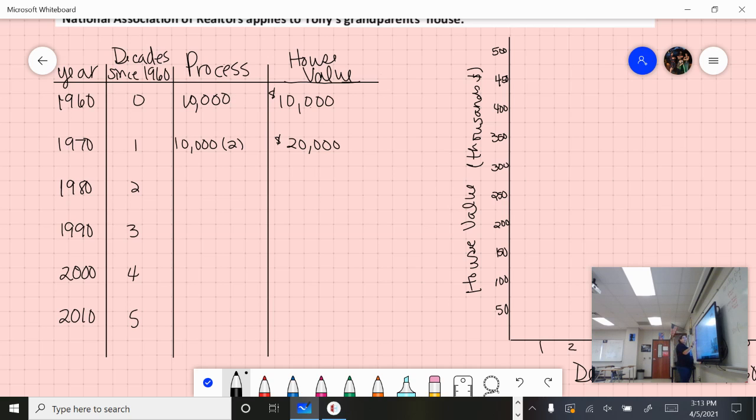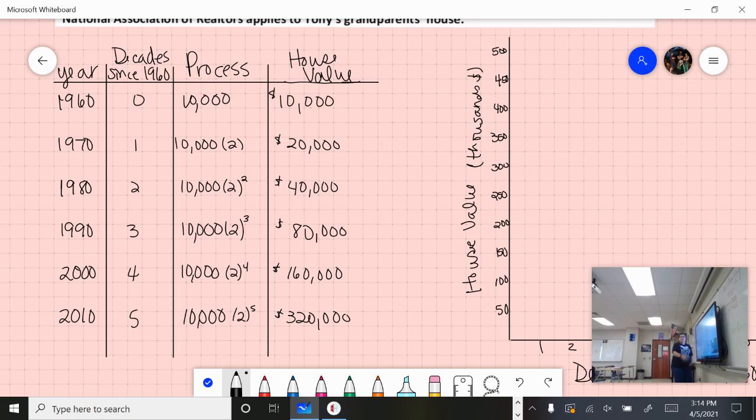In 1980 it had doubled again, so 10,000 times 2 times 2, or 2 squared, and it's now valued at $40,000. In 1990, it's doubled again, so 10,000 times 2 to the third power, or $80,000. In 2000, it's 2 to the fourth power, which is $160,000. And in 2010, it's 2 to the fifth power, or $320,000. These are closer to today's prices.